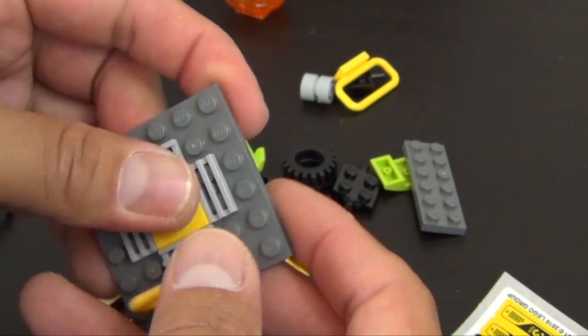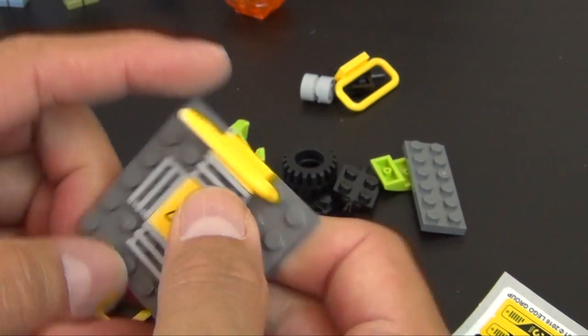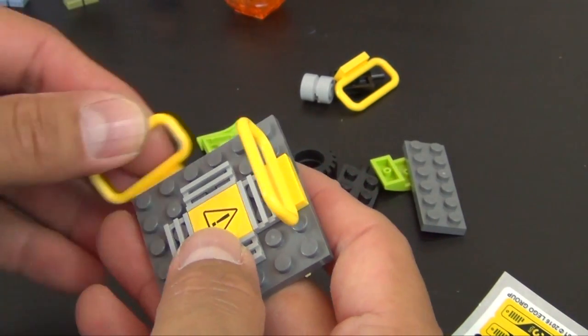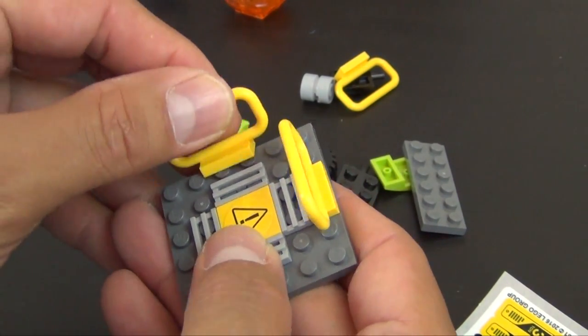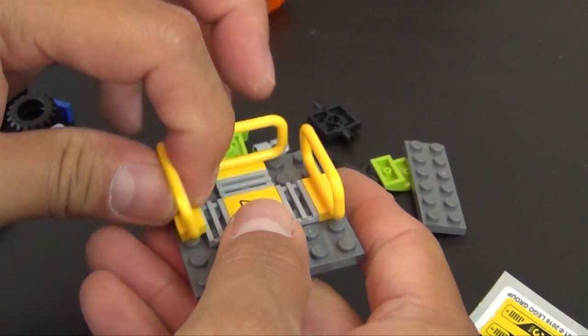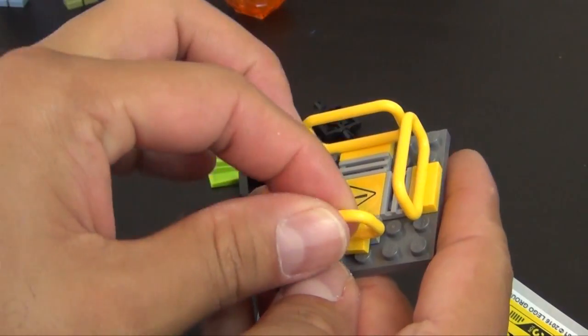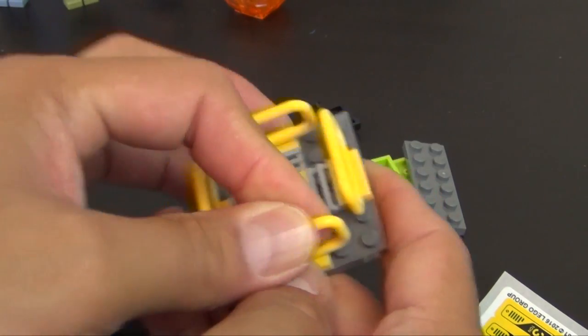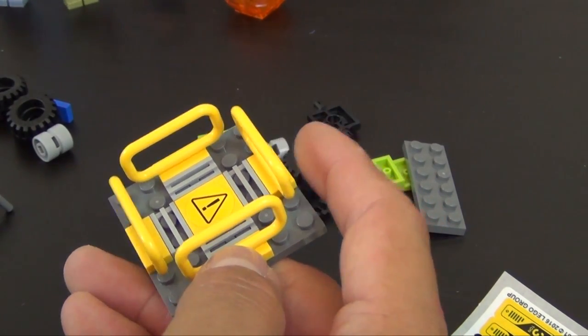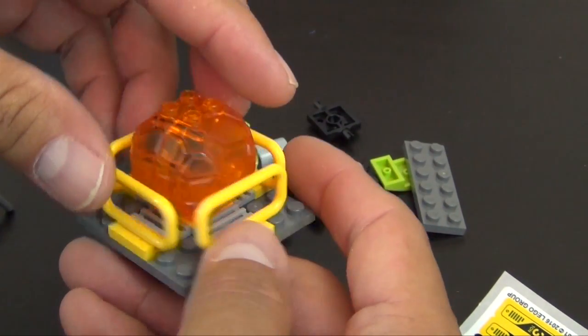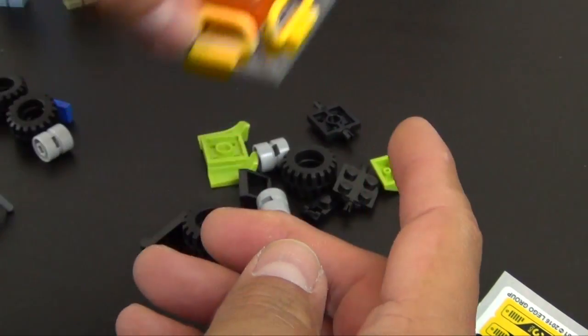Kind of a warning sticker like be careful, hot stuff coming through. Some railings to go around. This thing will basically go in there.